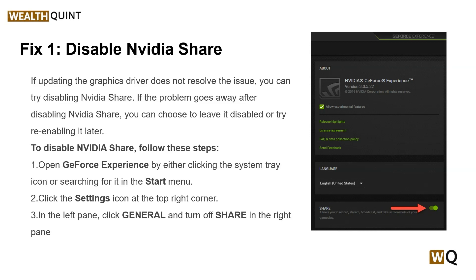To disable NVIDIA Share, follow these steps. First, open GeForce Experience by clicking the system tray icon or searching for it in the Start menu. Step 2, click the settings icon at the top right corner, then in the left panel click General and turn off Share in the right panel.